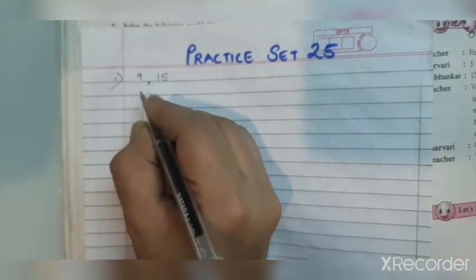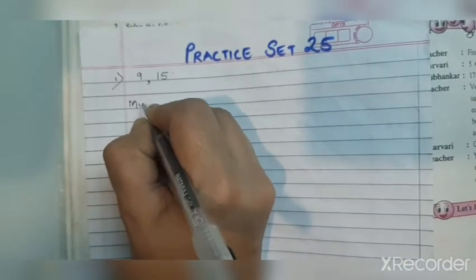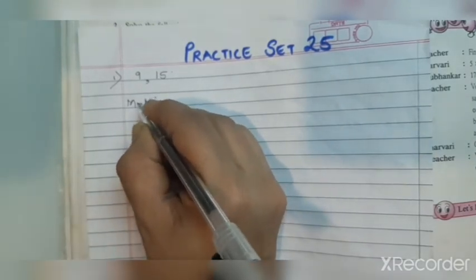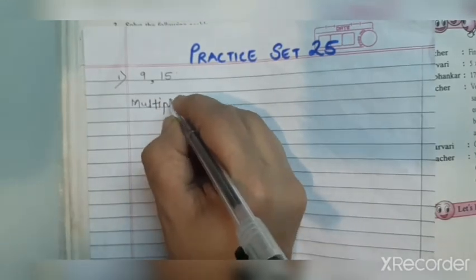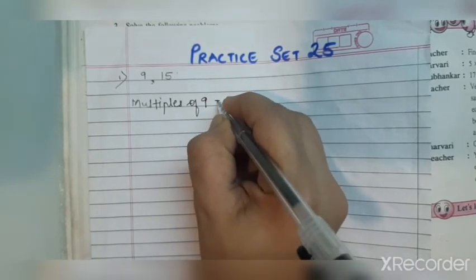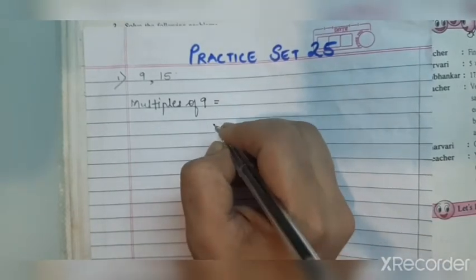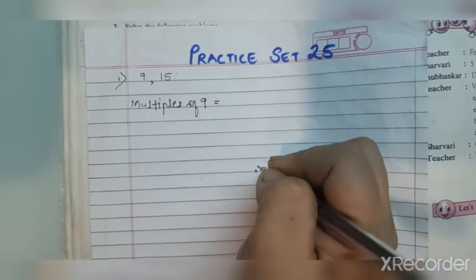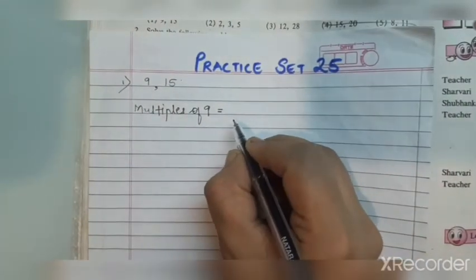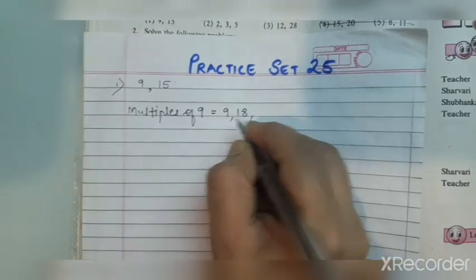The first sum is 9 and 15. First we need to write the multiples — we list them out. Multiples means we write the table of that particular number. So we write the table of 9: 9 ones are 9, 9 twos are 18, then 27, 36, 45, 54, 63, 72, 81, 90, 99, and so on.